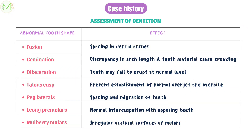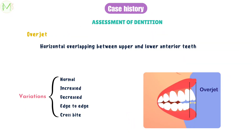We will check for molar, incisor, and canine relations as in the classification of malocclusion. Overjet is the horizontal overlapping between upper and lower anterior teeth. The normal value of overjet is 2 to 3 mm. Overjet can be increased, decreased, edge-to-edge, or a reverse overjet or crossbite. Overjet is measured from the labial surface of the mandibular anteriors to the incisal edges of the maxillary anteriors. If the overjet is 2 mm, it is Class 1; if more than 2 mm, it is Class 2; and if less than 2 mm, it is Class 3.